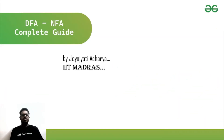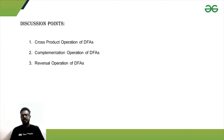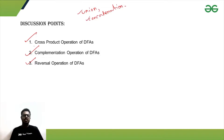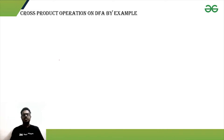Hello everyone, welcome to GeeksForGeeks. Today in the playlist of DFA/NFA complete guide, we will be looking into some more operations supported by our DFA. We'll look into basically three operations in today's session: one is the cross product operation, then complementation, then reversal. In the previous video we covered union and concatenation, and now we'll look into cross product, complementation, and reversal.